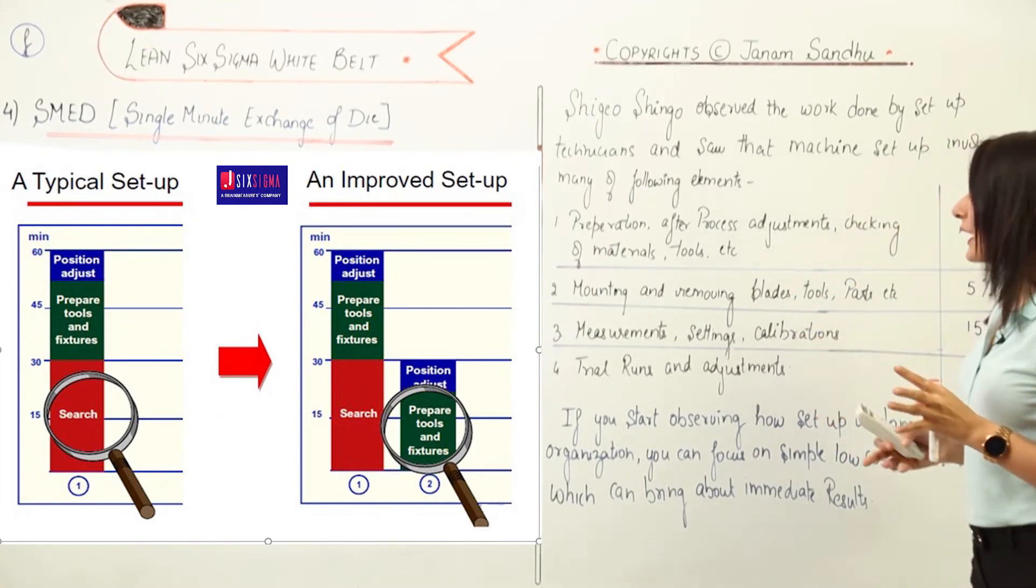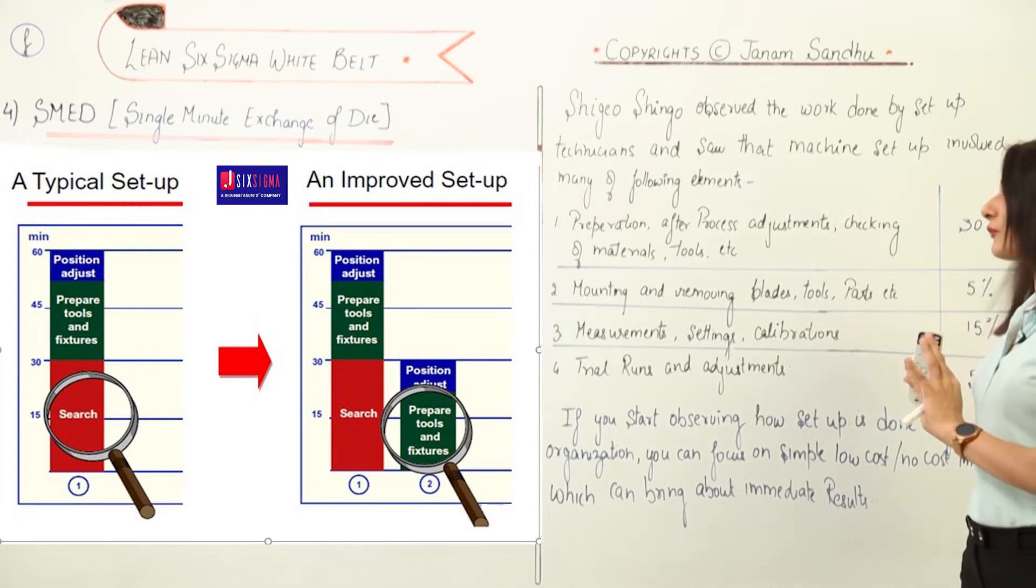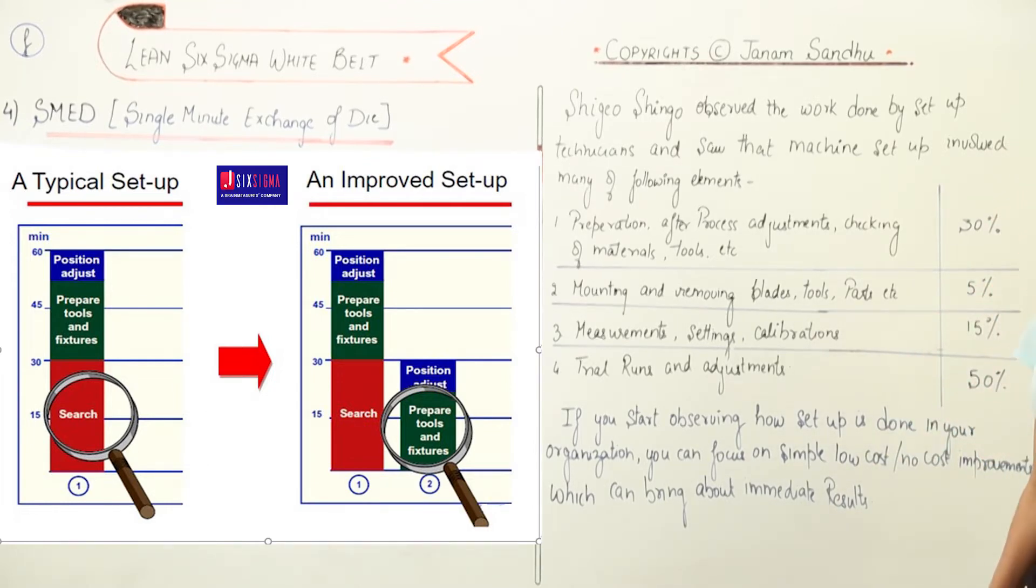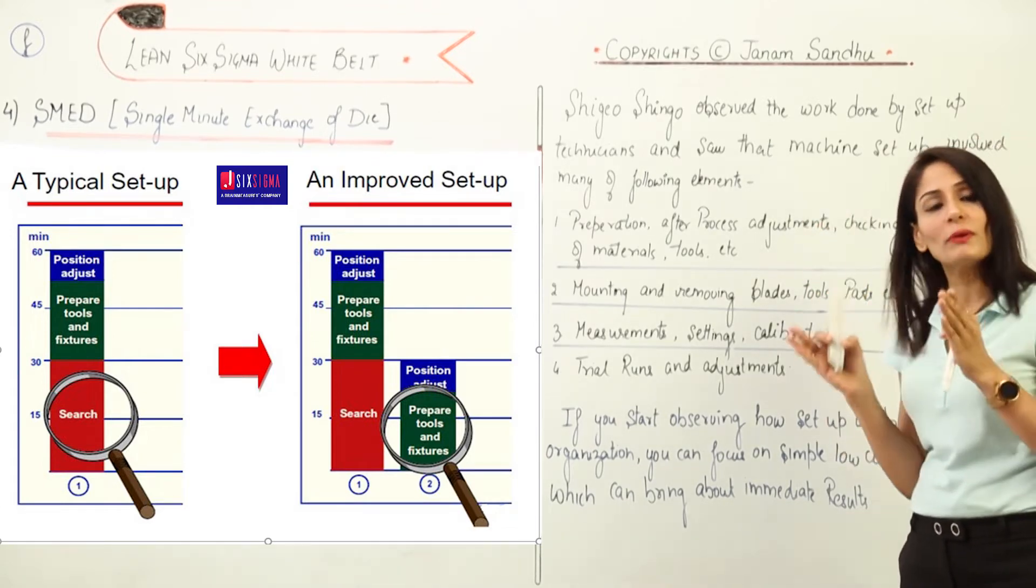First he observed that preparation, after-process adjustments, and checking of machines and tools took 30% of the time. Then mounting and removing blades, tools, and parts took 5% of the time. Measurement, setting, and calibrations took 15% of the time. Finally, the big chunk was taken by trial runs and adjustments, which took almost 50% of the time. So he thought, why do we have to spend so much time on this?